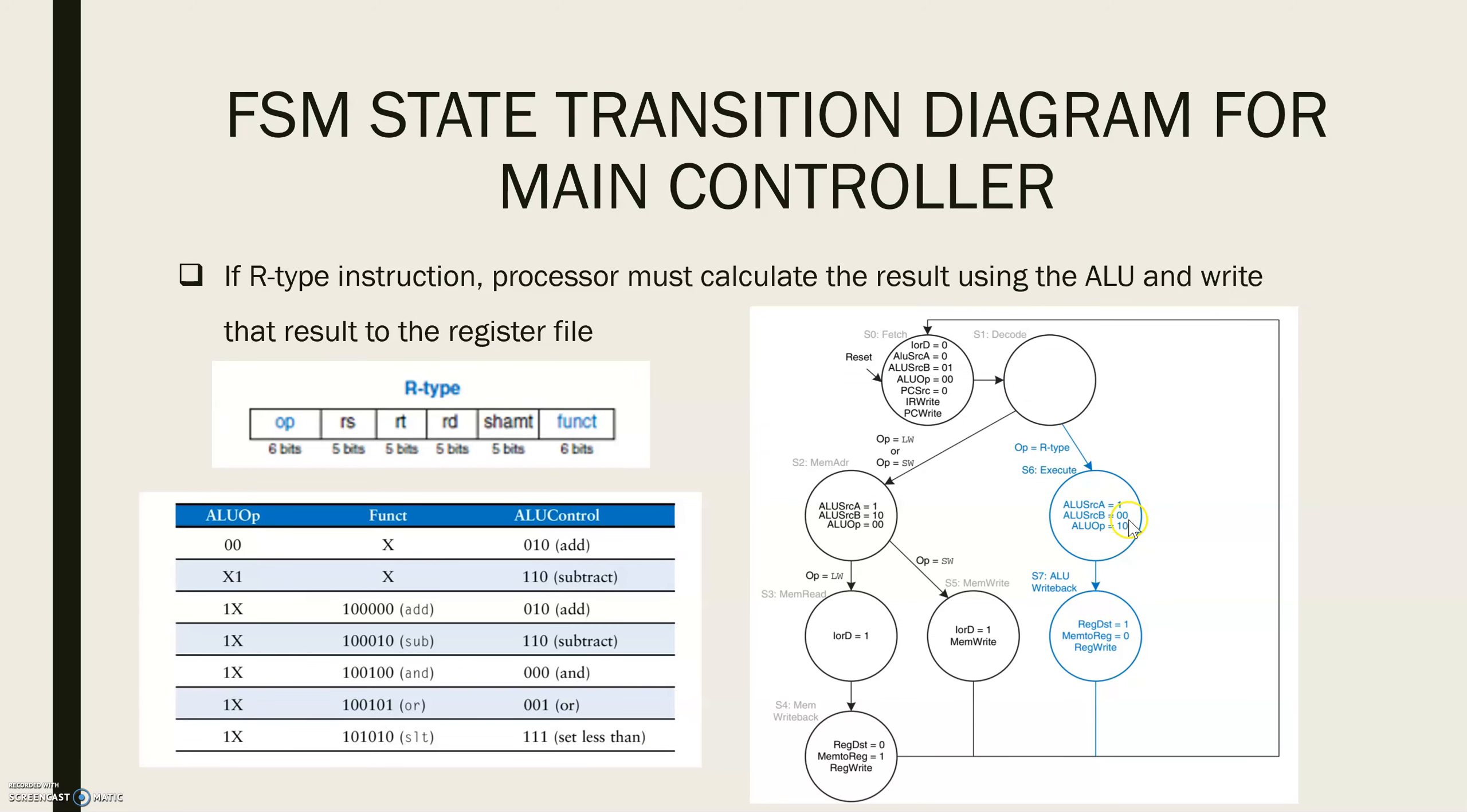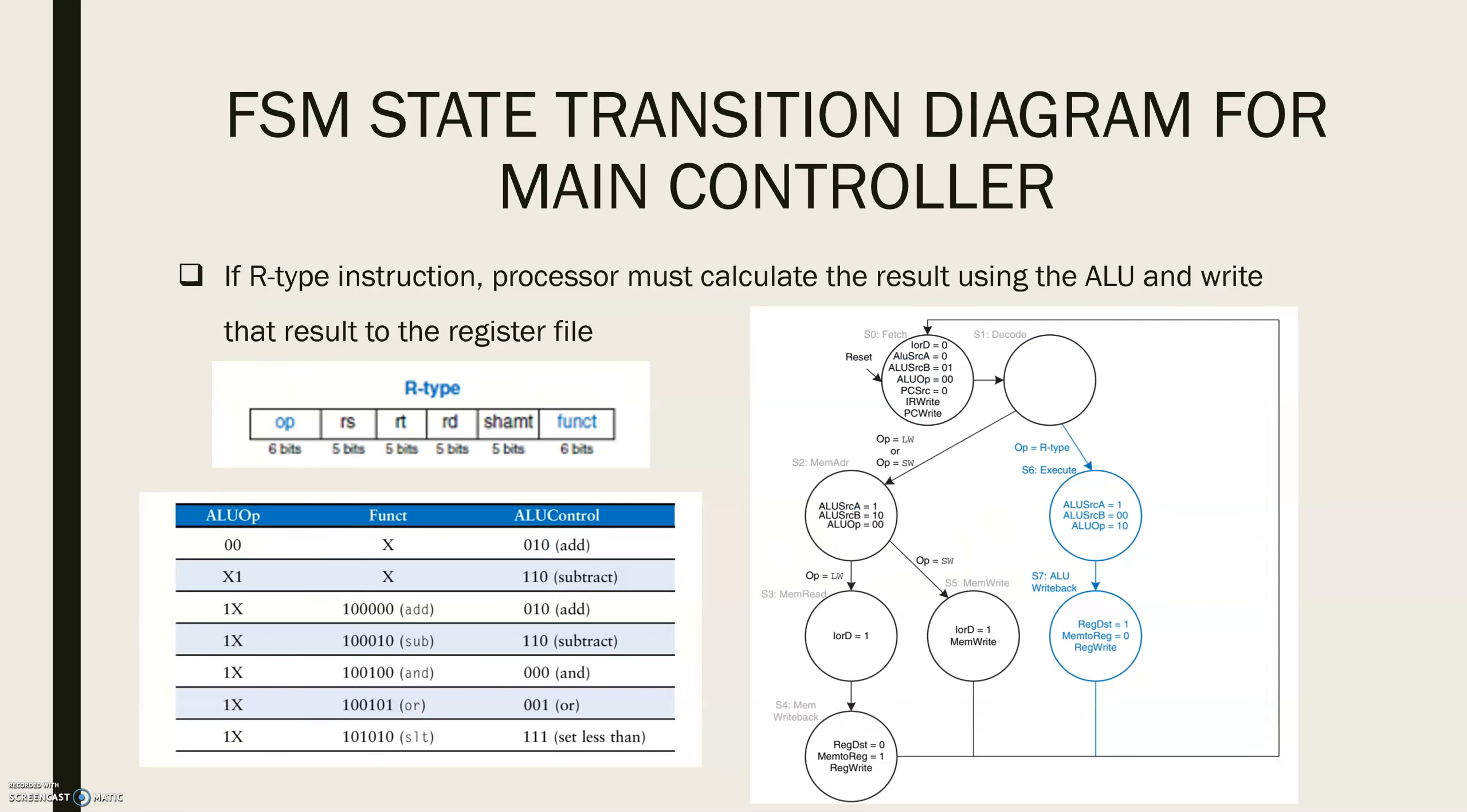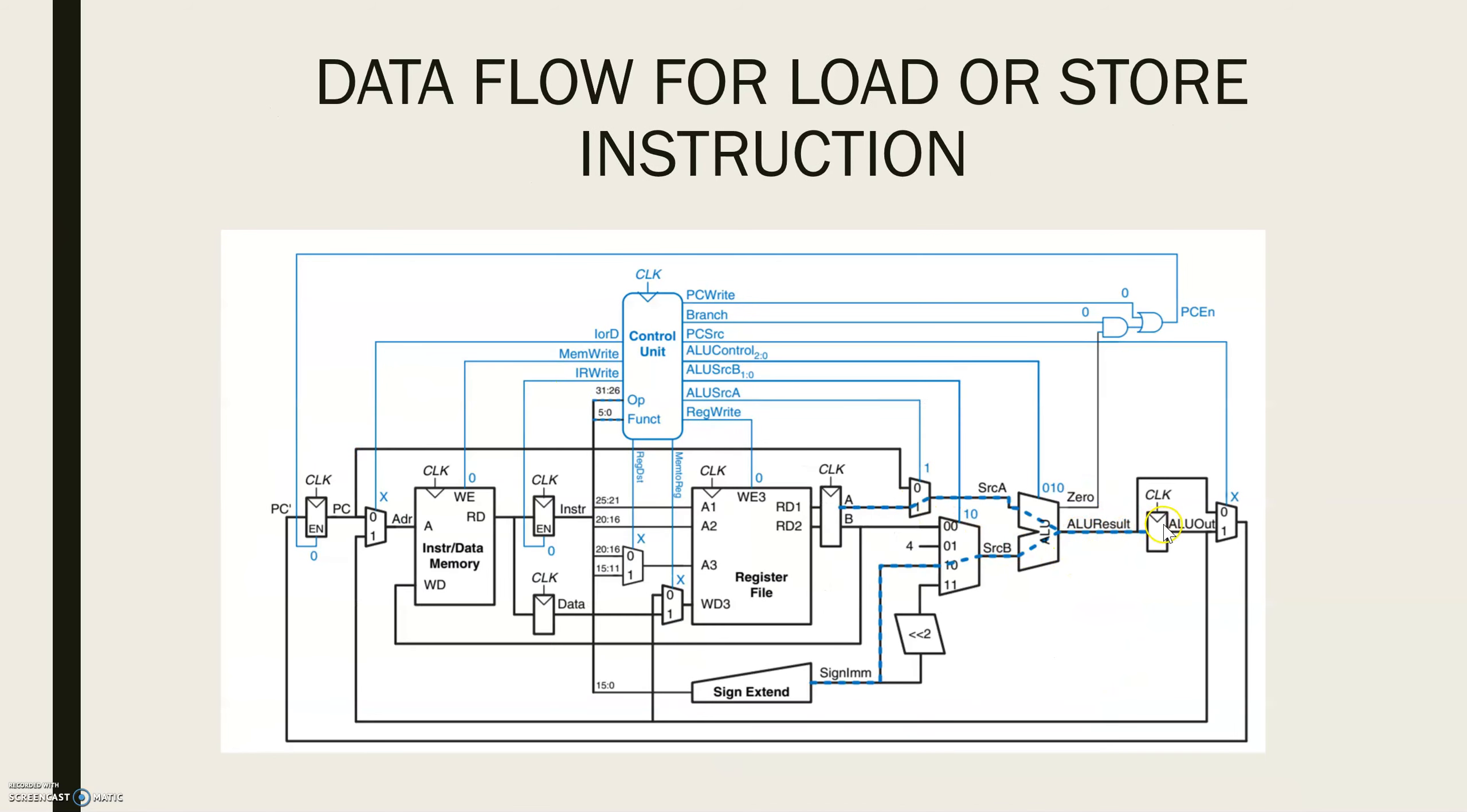ALUSRC B as 00 to select register B, and perform ALU operation indicated by the funct field of the instruction. ALU OP is 10 for all R-Type instructions. The ALU result is stored in ALU OUT.